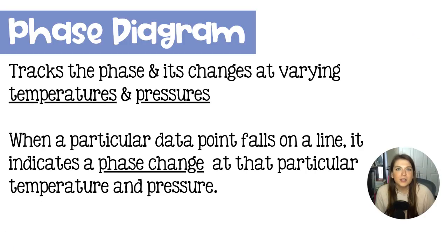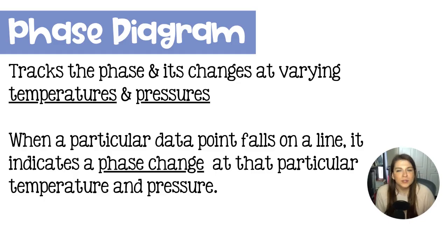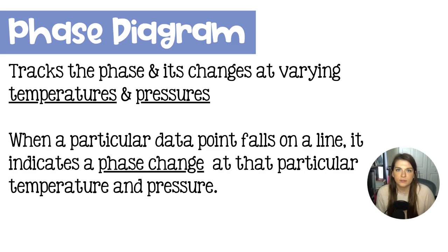Phase diagrams track the temperature changes and pressure changes on a sample alongside its phase of matter. When we talk about data points on this diagram, if your data point falls on a line, it is going to indicate a phase change between two areas of that graph. Phase changes can occur at multiple different temperatures and pressures, which you will be able to see on a phase diagram.